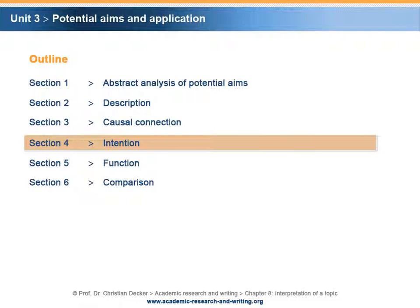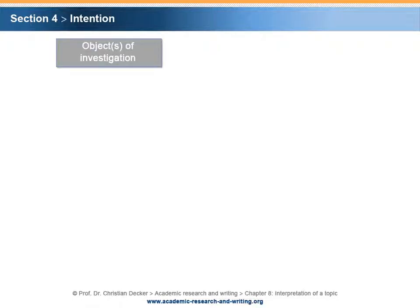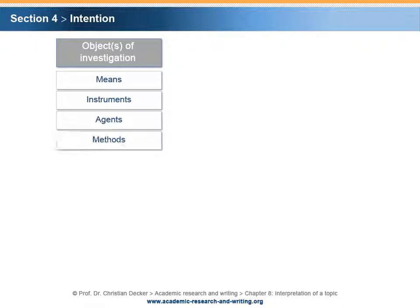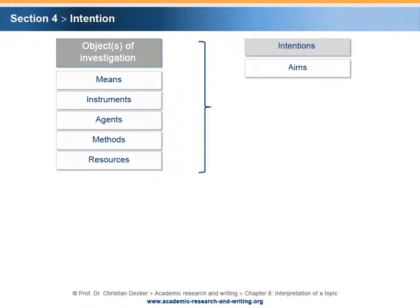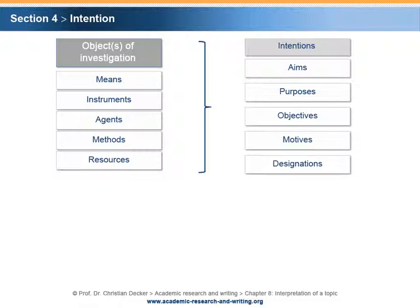Section 4 – Intention. An object of investigation can also be analyzed with respect to its aim, intention, or purpose. Potential objects of investigation are means, instruments, agents, methods, or resources. Potential intentions are aims, purposes, objectives, motives, and designations.